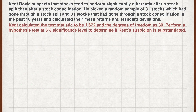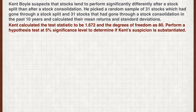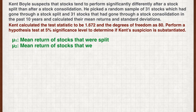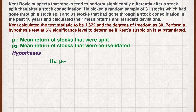Kent calculated the test statistic to be 1.672 and the degrees of freedom as 80. Perform a hypothesis test at 5% significance level to determine if Kent's suspicion is substantiated. Let mu1 be the mean return of stocks that were split and mu2 be the mean return of stocks that were consolidated. Since Kent's suspicion is that the two means are not equal, the alternative hypothesis is mu1 minus mu2 not equal to zero, and the null hypothesis is mu1 minus mu2 equals zero.